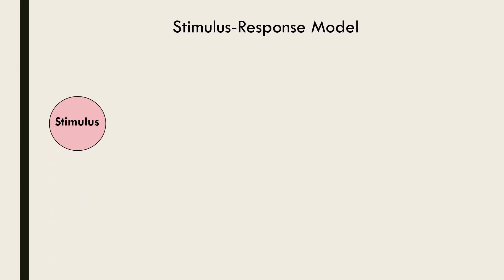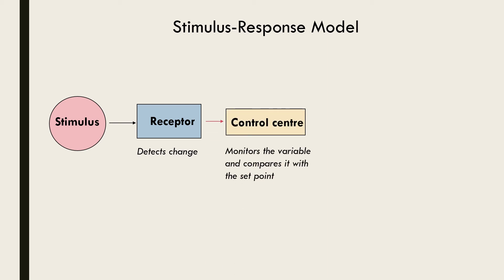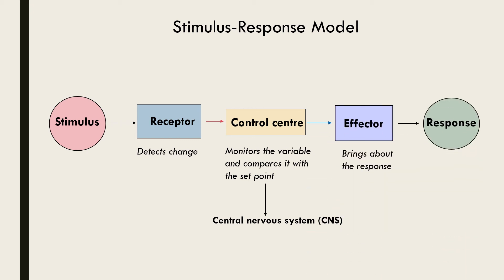Let's look at this model more closely. A stimulus — whether it is a chemical, temperature, pressure or light — is detected by a specific sensory receptor. This information is relayed to the control centre where decision making occurs as a result of monitoring the variable and comparing it with the set point. This control centre is located in the central nervous system and can be in different parts depending on the stimulus. For example, the hypothalamus regulates body temperature, whereas reflexes only travel to the spinal cord. Once the control centre has determined what the appropriate response should be, it stimulates an effector which brings about the response. Effectors are generally muscles or glands, so this response may be the secretion of a hormone or contraction of a muscle.